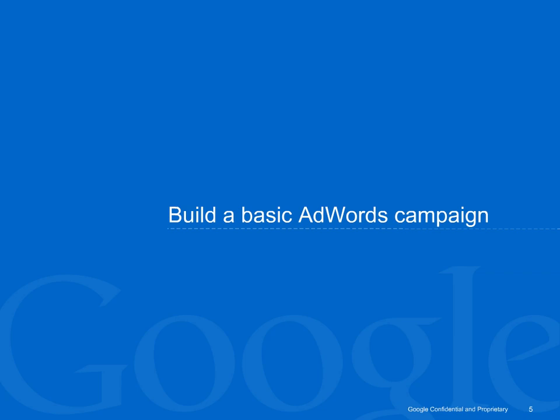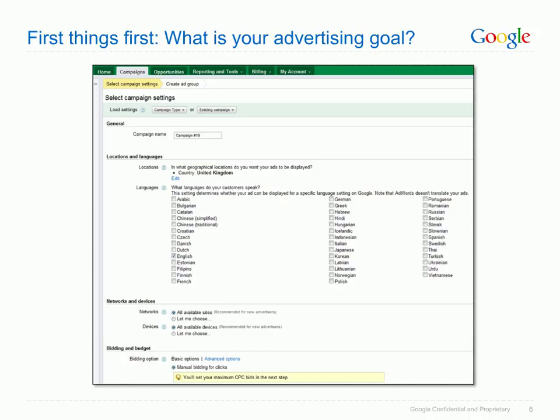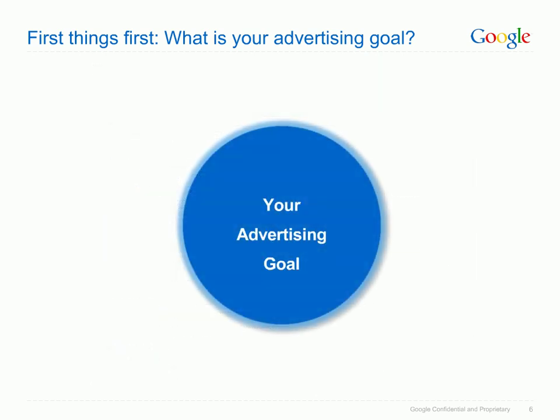Now that we have shown you how to access your AdWords account, let's look at how to set up a basic AdWords campaign. Even if you have set one up already, this could help you improve your current campaign with your advertising goals in mind. Before you even start setting up your first AdWords campaign, think about what it is that you're actually trying to accomplish. What is your advertising goal?